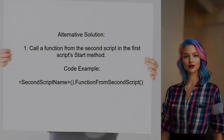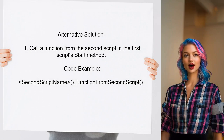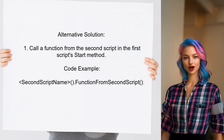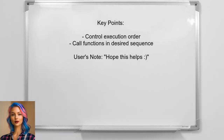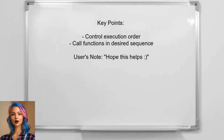Another alternative approach suggests you can control the execution order by calling a function from the second script at the end of the first script's Start method. You can do this by referencing the second script and its function directly. This way, you can execute functions in any order you prefer.